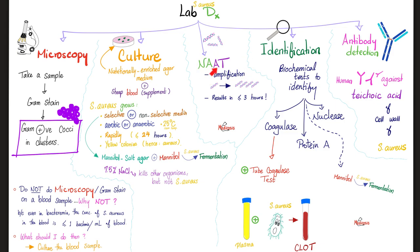Next, the nucleic acid amplification test: take the nucleic acid from the bacterial cell and amplify it to produce billions of copies. Results are available very fast — in less than 3 hours — by recognizing the genetic material of Staph aureus.